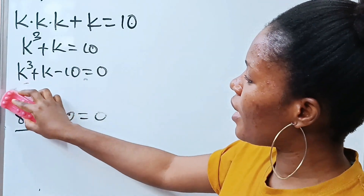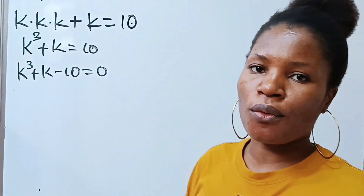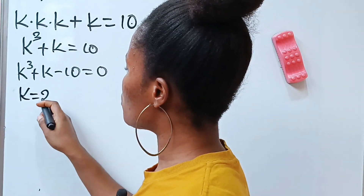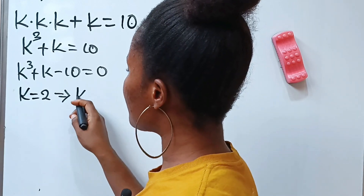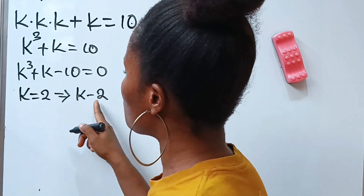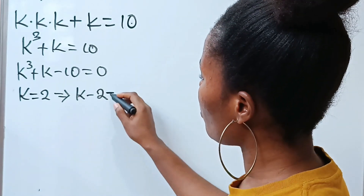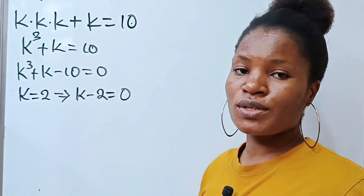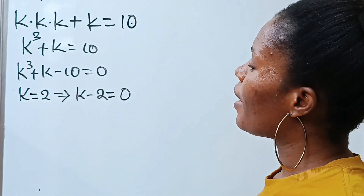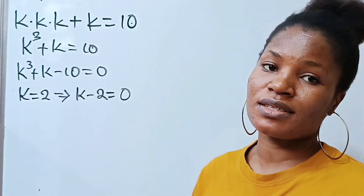So we can say that k is equal to 2, which implies that k minus 2 is equal to 0. Now the next thing we need to do is go ahead and divide synthetically.